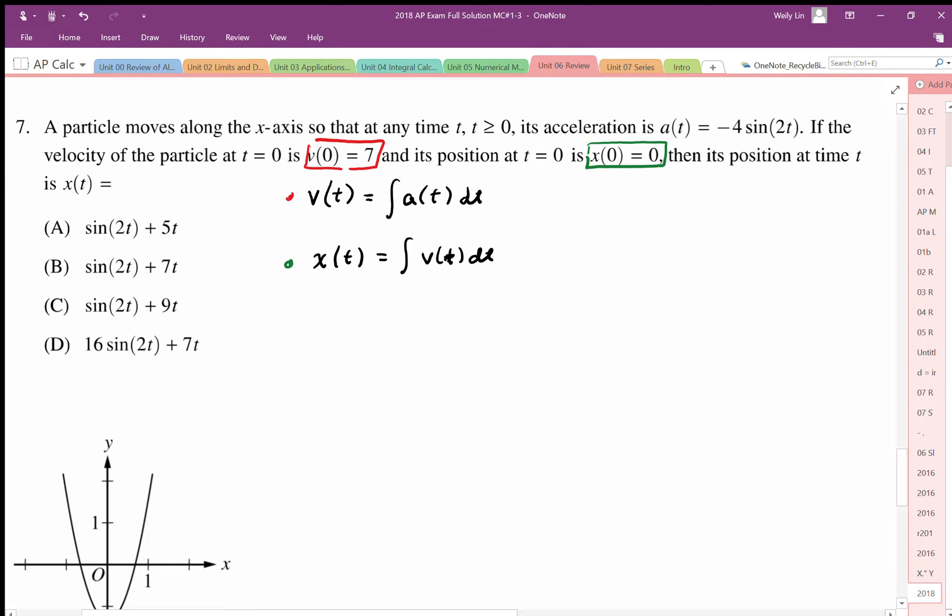So I'm going to anti-differentiate this expression. So v of t is equal to the anti-derivative of negative 4 sine of 2t dt. So the anti-derivative of negative sine, and make sure you're careful with your negative. So the derivative of cosine is negative sine, so the integral of this is going to be positive 4 cosine of 2t, divide by 2, because that horizontal compression, and plus c. So we end up with v of t is equal to this expression. We're going to simplify that. But we're also going to plug in the 0 to be able to solve for the c value.